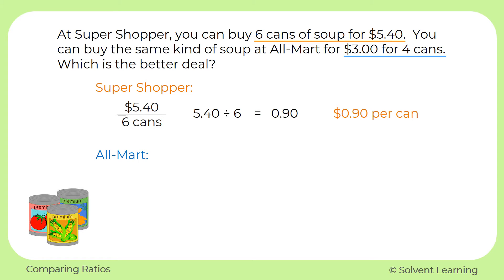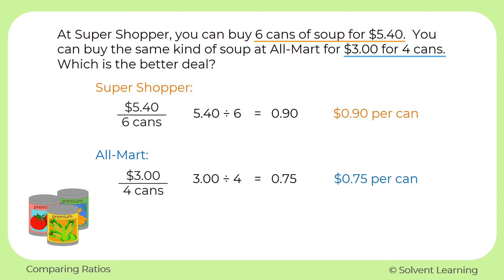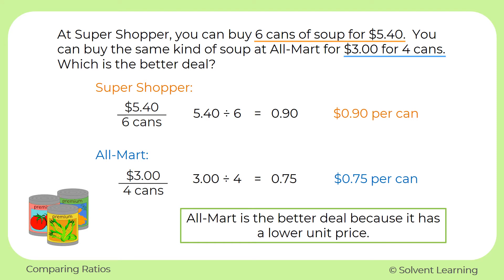At All-Mart we have three dollars for four cans. As a fraction that's three dollars over four cans, keeping the money at the numerator. Using division, three divided by four equals zero point seven five, or seventy-five cents per can. When we're shopping the better deal means the lower price. Since All-Mart is seventy-five cents per can, All-Mart is the better deal because it has a lower unit price.